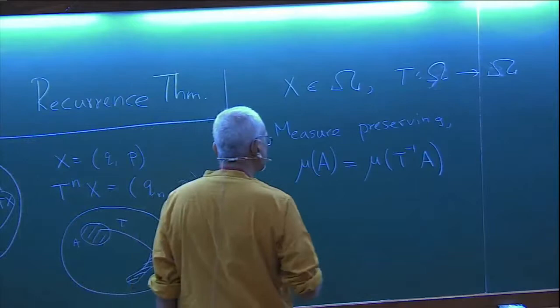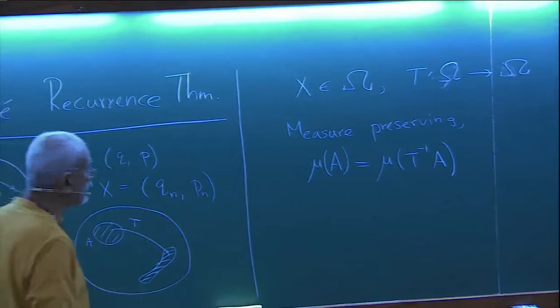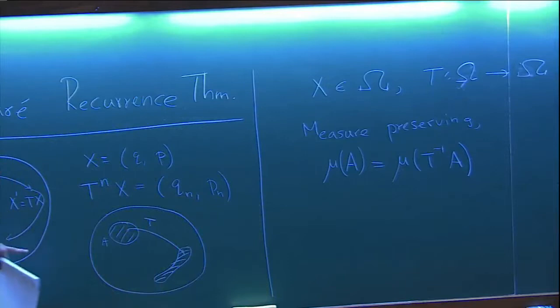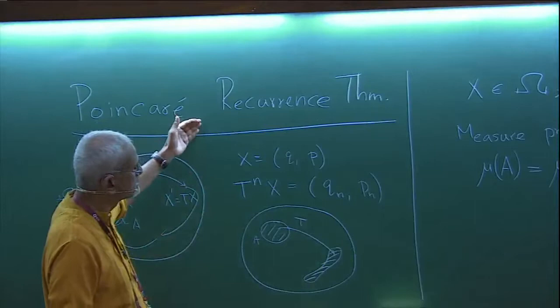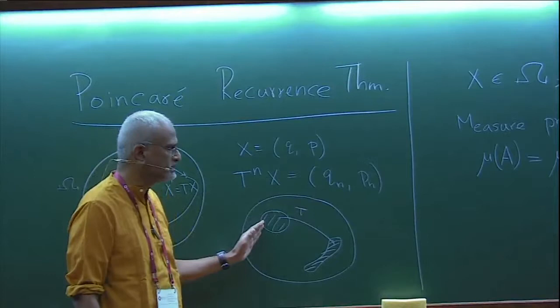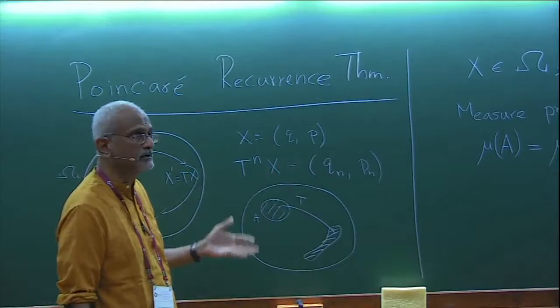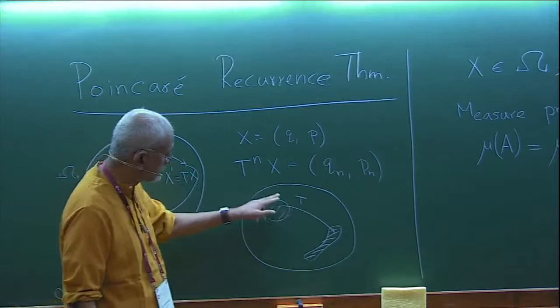Poincaré's Recurrence Theorem is then a statement of the following kind. In plain English: if you take some point in a set A and keep iterating it, will it come back to A? Poincaré's theorem assures us that it will come back eventually — not just once, but an infinite number of times. That's why it's called a recurrence theorem. History repeats itself, infinitely often. There are no conditions on A other than it being a measurable finite-measure subset.